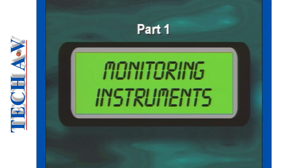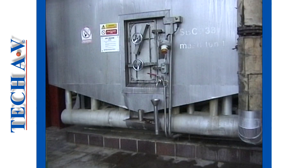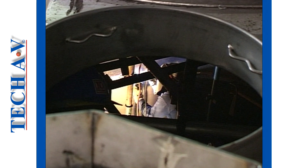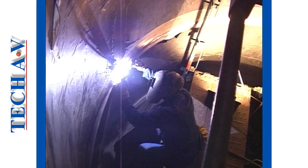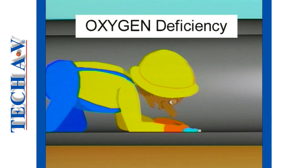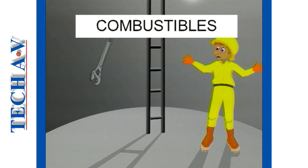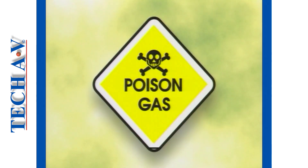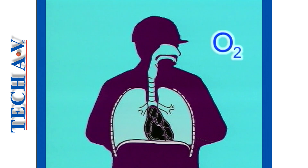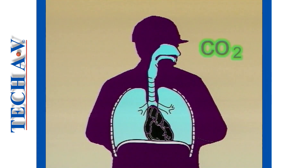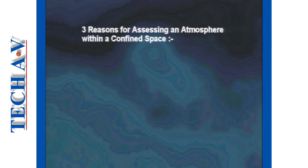As we learned in program one, we know that an atmosphere within a confined space can present possible hazards such as oxygen deficiency, combustible gases and vapors, and toxic substances. We also learned that in an oxygen-deficient atmosphere the displaced oxygen can easily be replaced by other gases, and that these gases can cause asphyxiation.